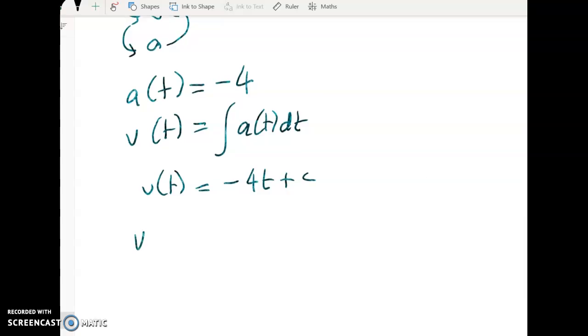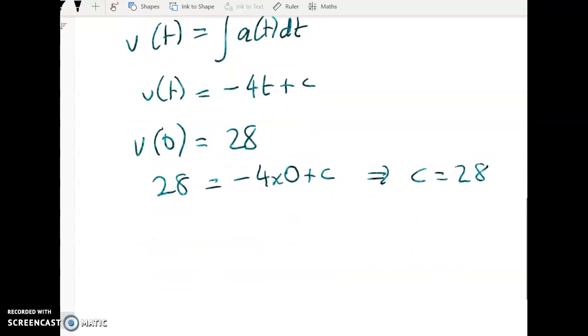But in this case, we know that V at time 0 is not 0, right? It's 28. So 28 is equal to negative 4 times 0 plus C, which means that C is equal to 28. That gives me a velocity function of negative 4T plus 28.